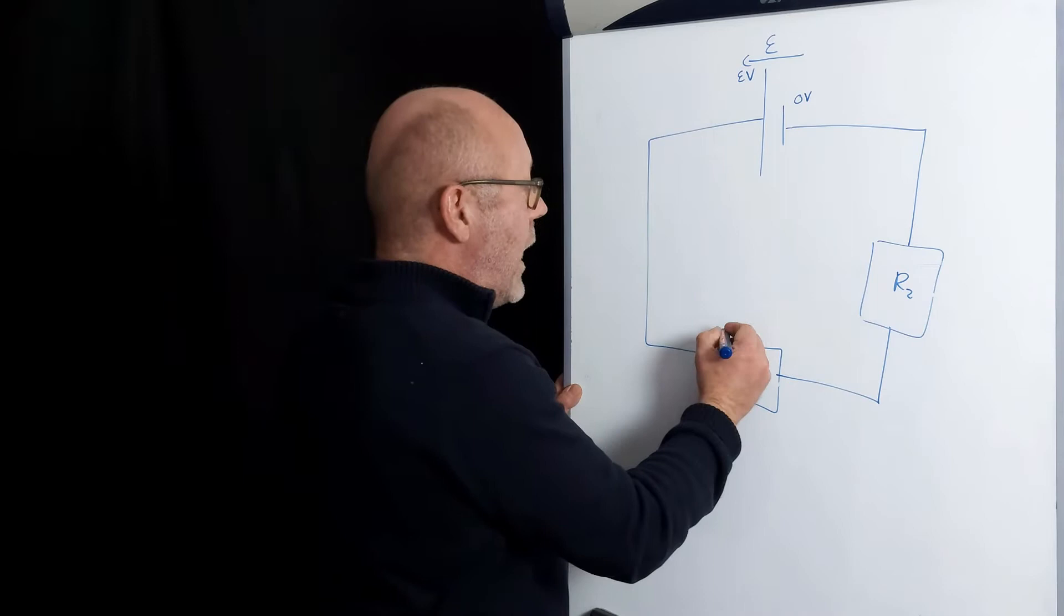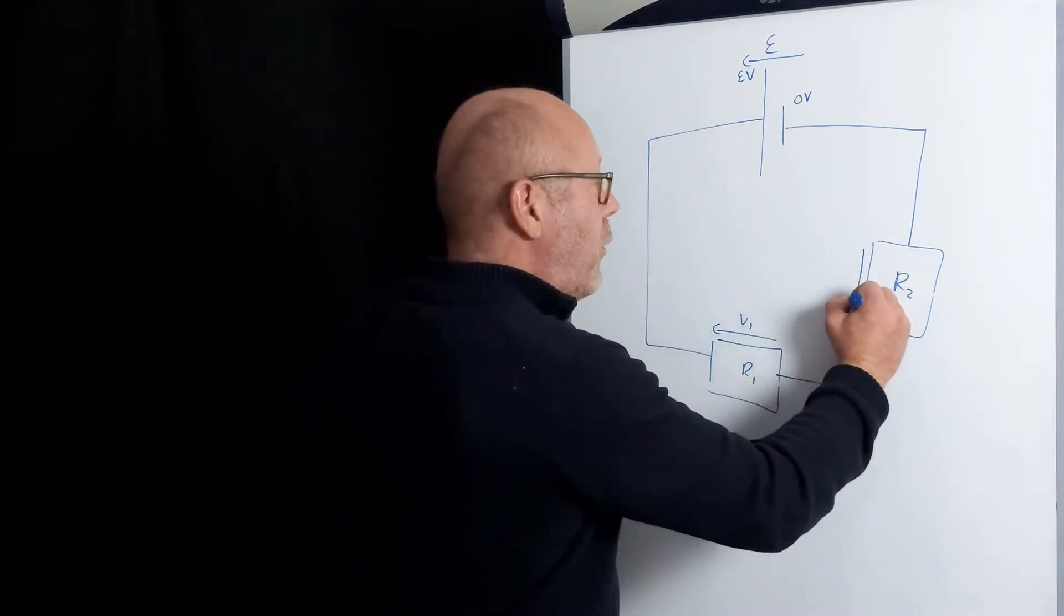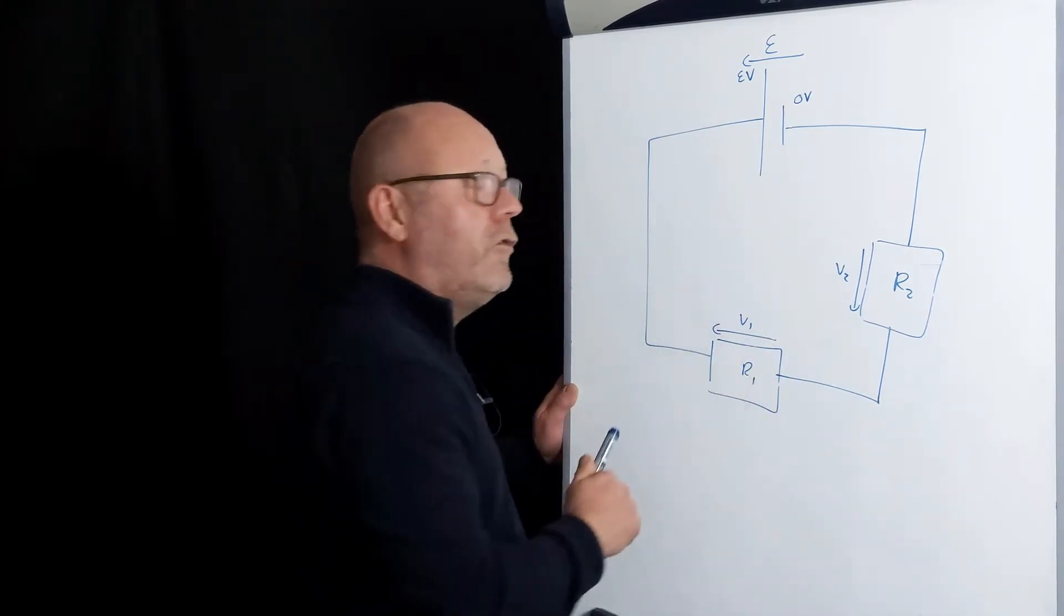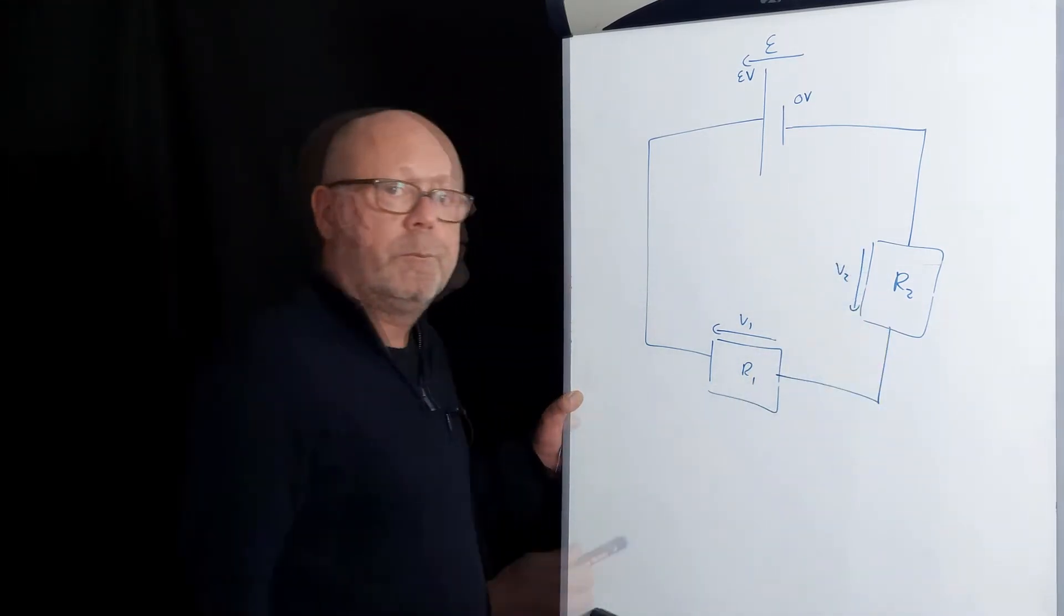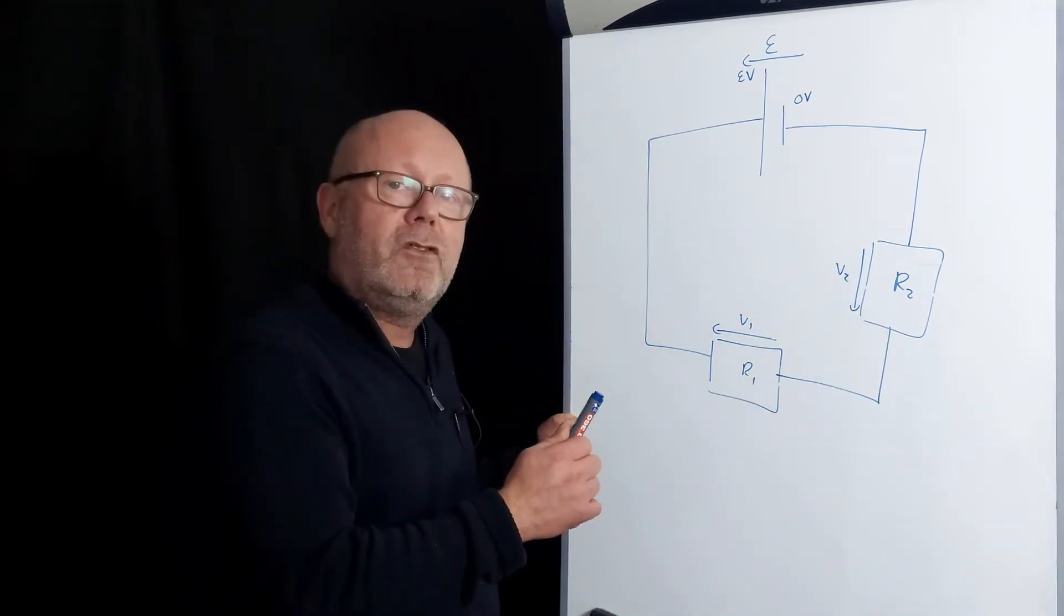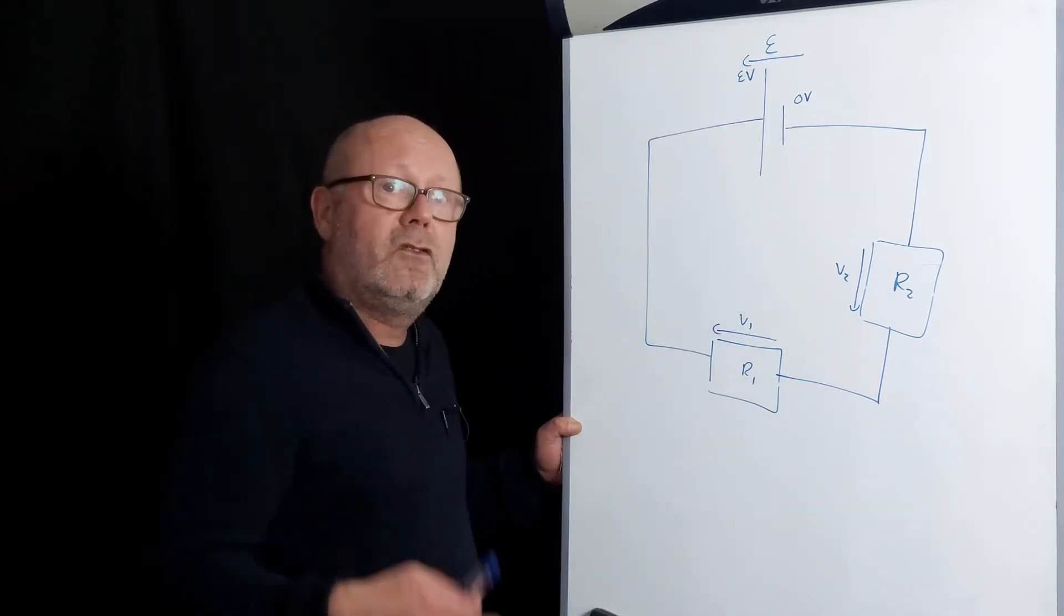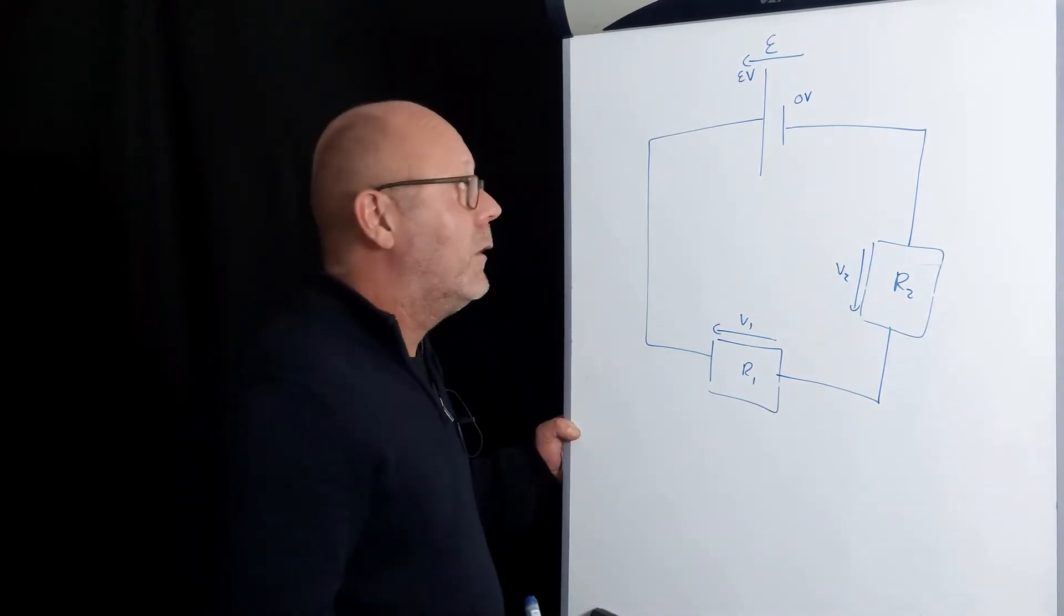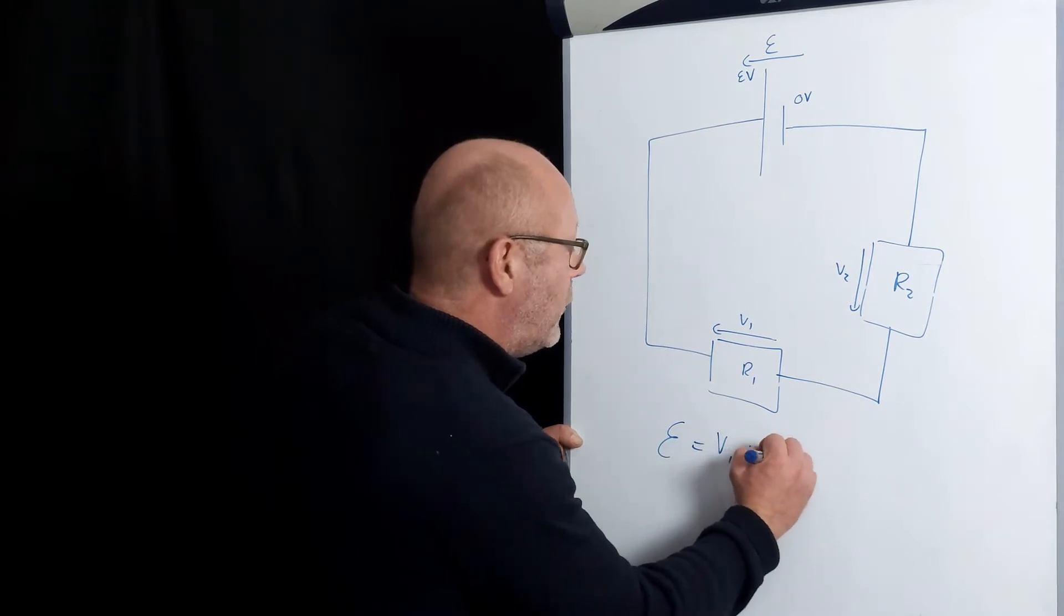R1 and R2. The battery will provide εJ for each coulomb that passes through the battery. Here, you will have a potential drop V1 and a potential drop V2. Meaning that each coulomb of charges will lose V1 joules in this resistor and V2 joules in this one. Now, because of conservation of energy, the number of joules provided per coulomb by the battery needs to equate the number of joules lost in the resistors for each coulomb.